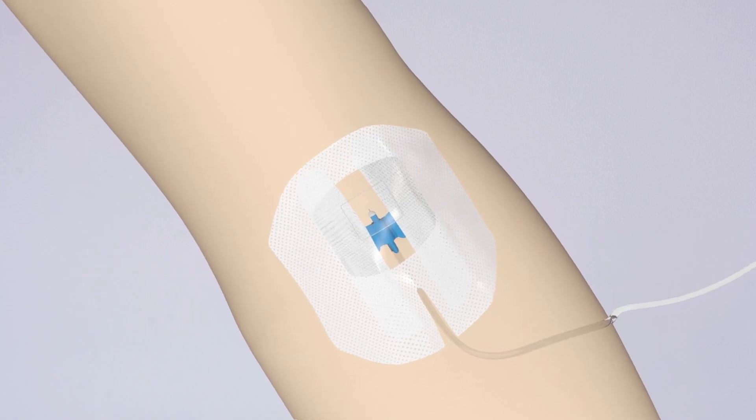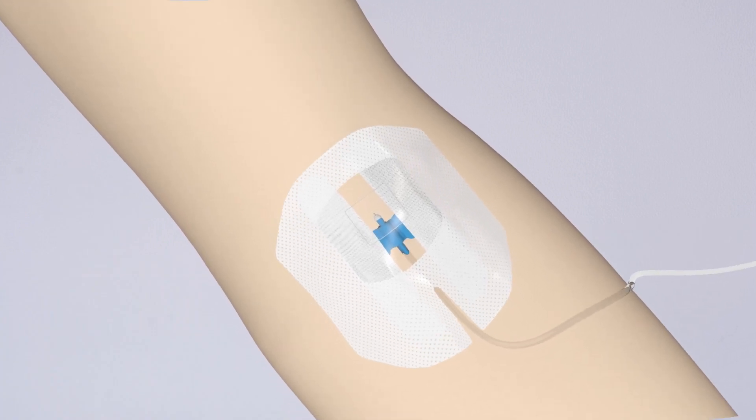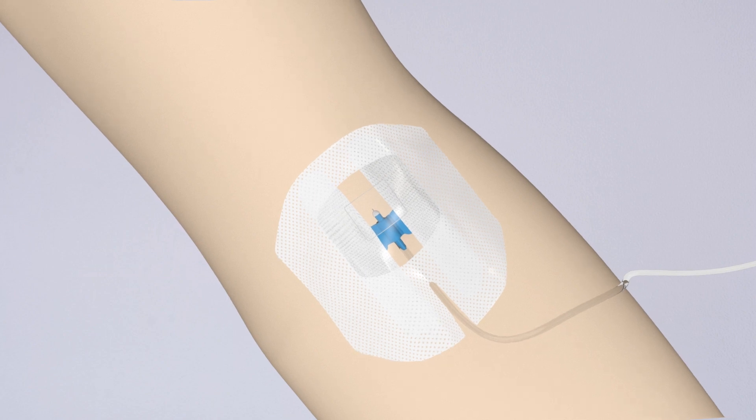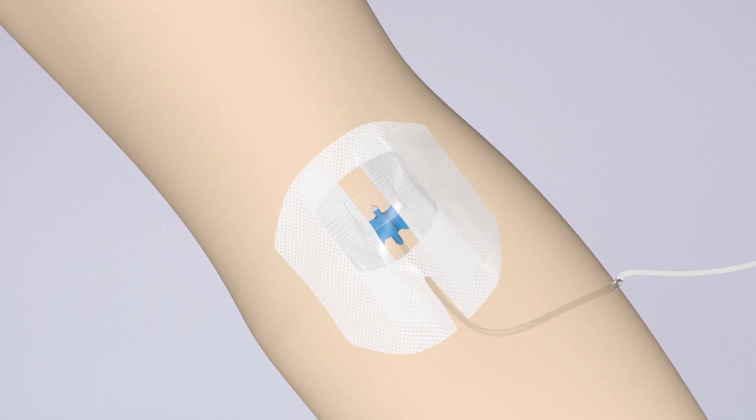AbsoClear IV is designed to maintain securement by preventing edge lift, flexing with patient movement and managing moisture underneath the dressing.